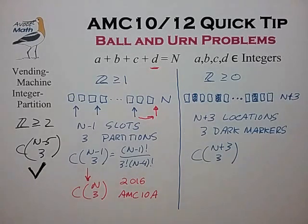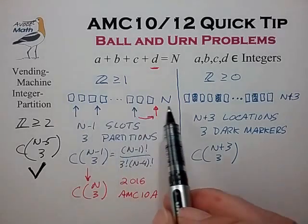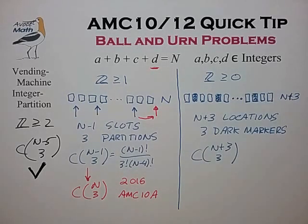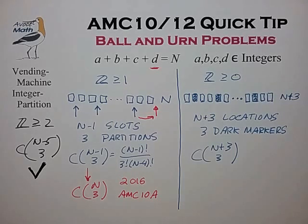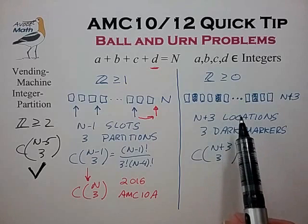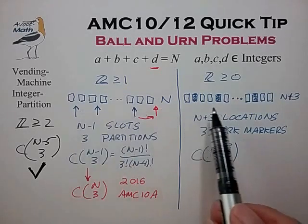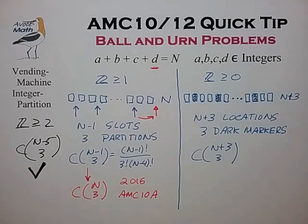Those are the basic patterns to keep in mind, and I find these pictures really helpful to keep it all straight. The underlying mathematics is quite simple if you understand basic combinations. The real difficulty in the AMC and AIME is recognizing this pattern for a given counting problem and applying these tools correctly. To do that, you'll need to practice on a few AMC problems — check out the description section for several example problems. Good luck and we'll see you at the next video.